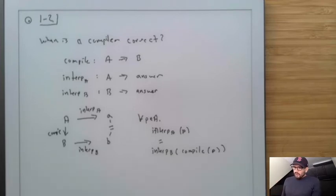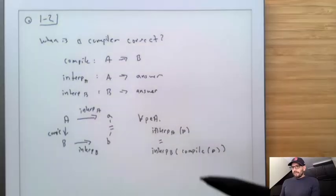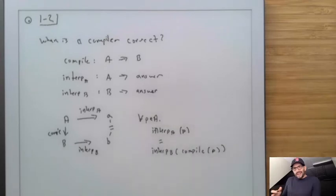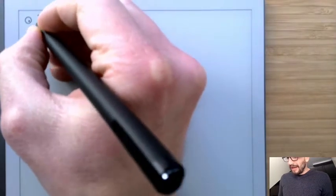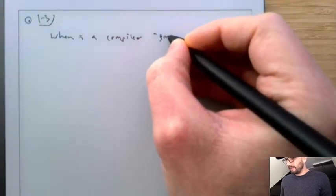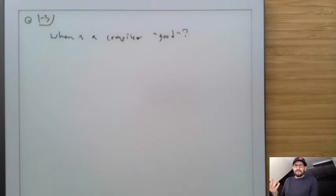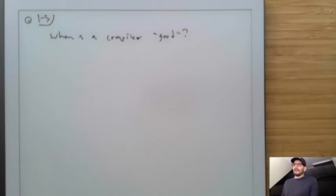We've established what a compiler is — it takes a program written in one language and turns it into a program written in another language. We've talked about how we know it's correct if it returns the same answer. There's another thing that matters: when is a compiler good? Good is a very broad term. I'll talk about two ways of thinking about it.